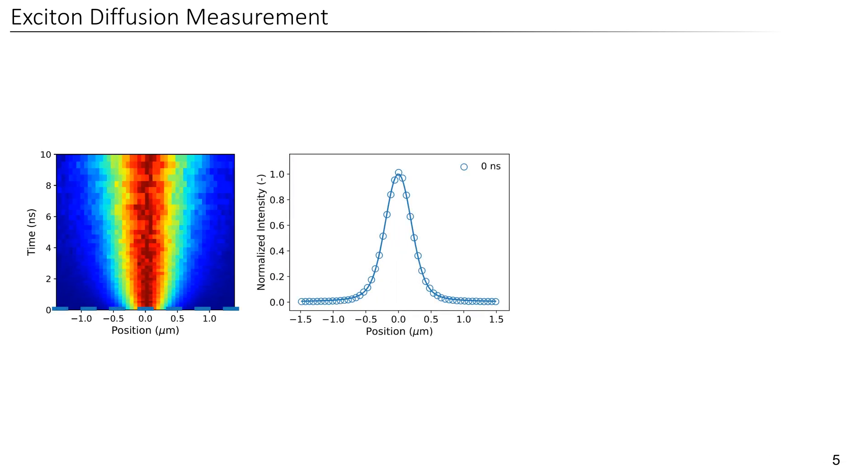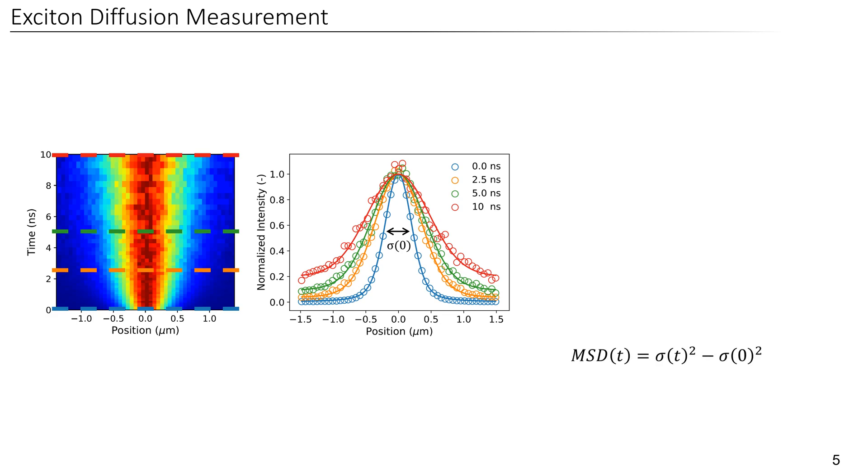You can see that at early times, we have a very narrow distribution of excitons that we have just created with our laser pulse. As time goes by, excitons start diffusing outwards and the distribution becomes broader and broader. We can quantify this broadening by extracting the mean square displacement of the distribution, which is the square of the standard deviation minus the square of the standard deviation at time zero. In doing so, we obtain this graph here.